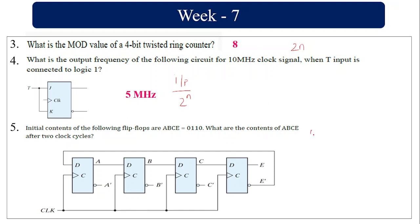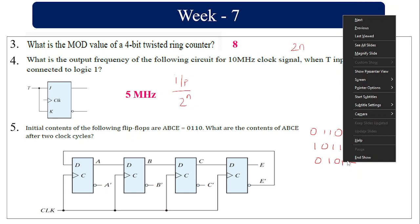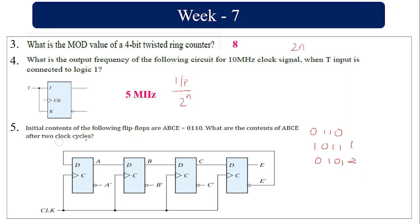The initial content of the following flip-flops is 0 1 1 0. For the first clock cycle, E-bar will be 1, so the result is 0 1 1. In the second cycle, E-bar becomes 0, so it becomes 0 here, and the result is 1 0 1. The answer is 0 1 0 1.